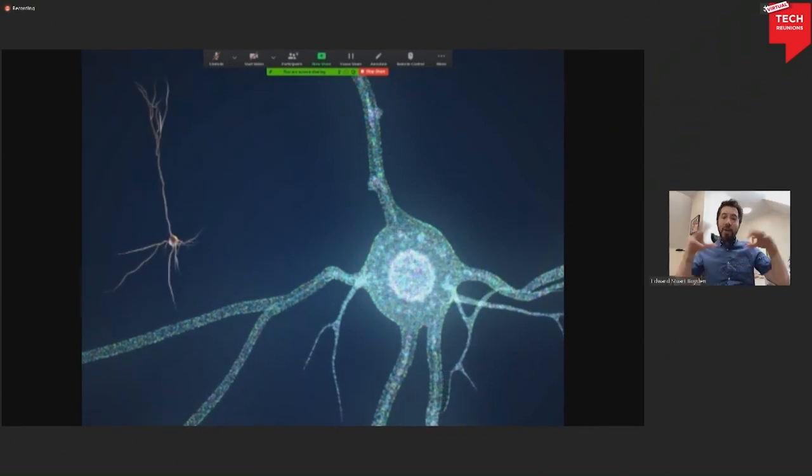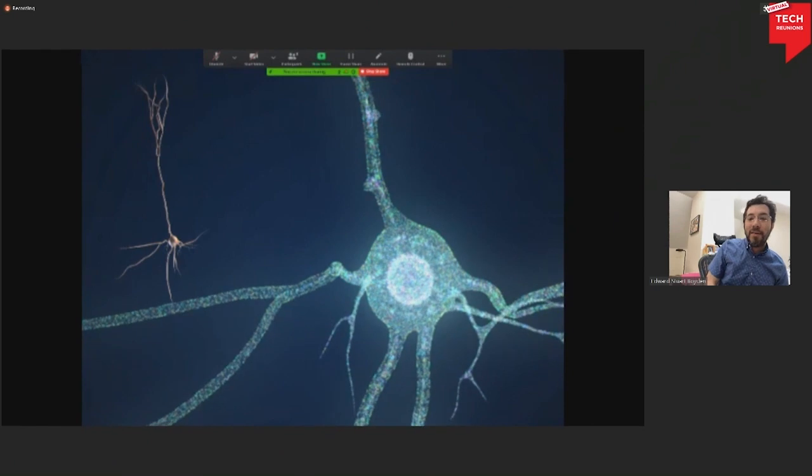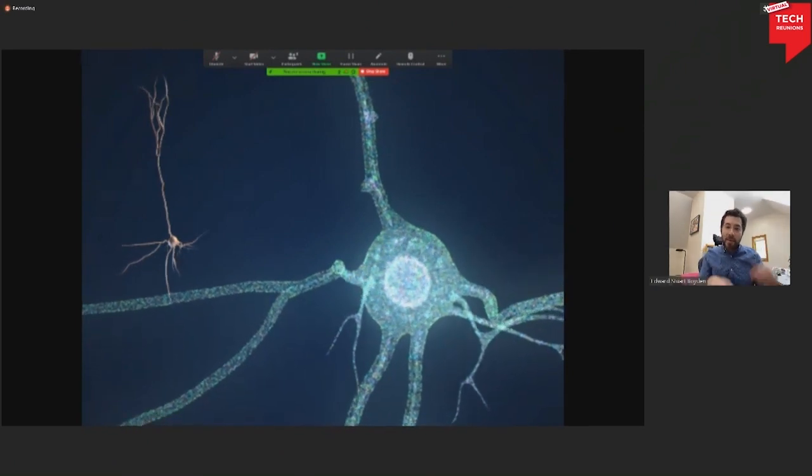Now importantly, this expansion process is very, very even. We're turning a cell like the one on the left into a cell like the one on the right. Remember those nanoscale biomolecules I told you about? We're pulling them apart with nanoscale precision so that the biomolecules are like a constellation of stars hovering in space, but with their relative organization, meaning the biological information, preserved.